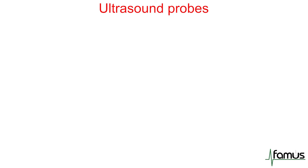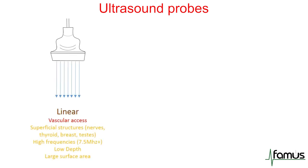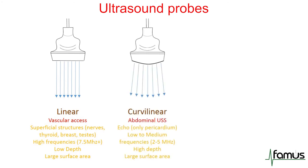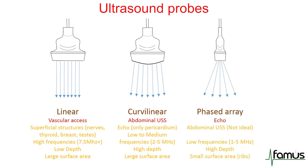Looking at point-of-care ultrasound transducers: linear transducers are high-frequency probes giving good resolution but limited depth, making them perfect for superficial structures like nerves, thyroid, breast tissue, and testicles — also used for vascular access. Curvilinear probes are ideal for abdominal ultrasound, being low-to-medium frequency and giving good depth and resolution. A phased array probe is mainly used in echocardiography, has a low frequency for good depth, and has a particularly small surface area.